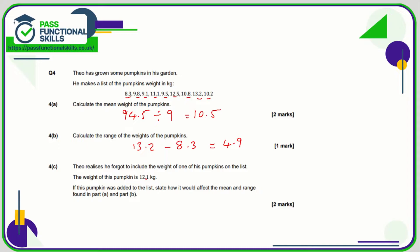Theo realizes he forgot to include the weight of one pumpkin, which is 12.1. If this is added to the list, how does it affect the mean and the range? The mean was 10.5 — since we're adding a pumpkin heavier than the mean, the mean will increase. The range will not be affected because 12.1 has not increased the maximum (13.2) or decreased the minimum (8.3), so the range remains the same but the mean will go up.